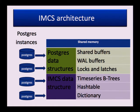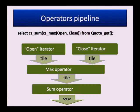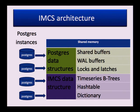IMCS keeps its data in Postgres shared memory, as well as Postgres internal shared buffers and WAL buffers. The main data structure used by IMCS for storing time series data is a B-tree. The key of the B-tree is either a timestamp or the element position in the time series. Time series can have identifiers, and a hash table is used to locate time series by this identifier. A dictionary is also used, which I will explain later.